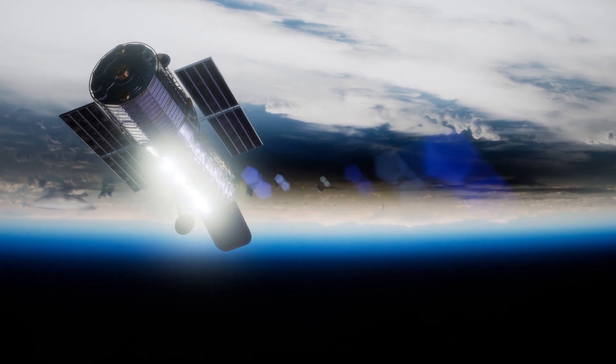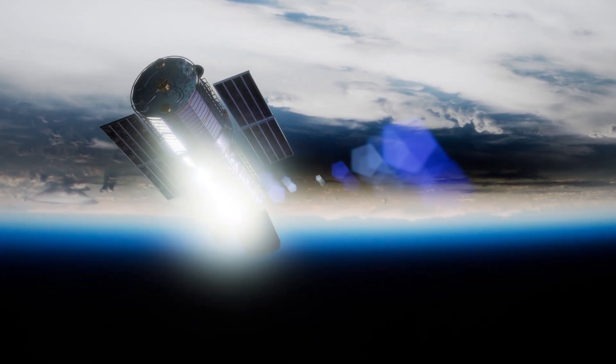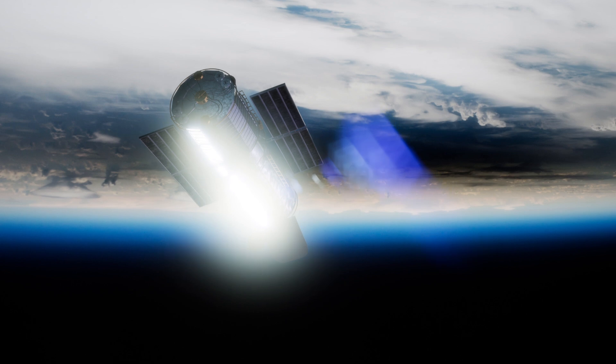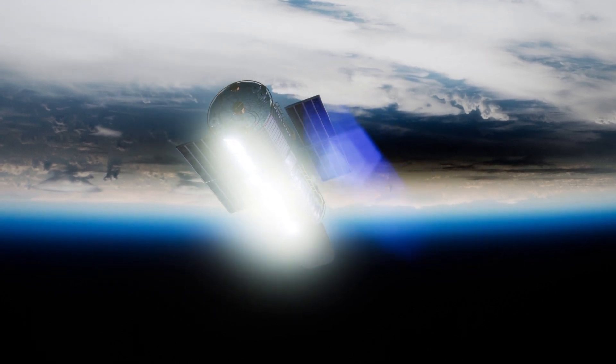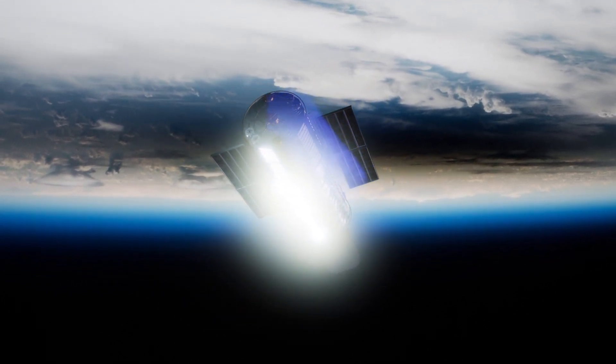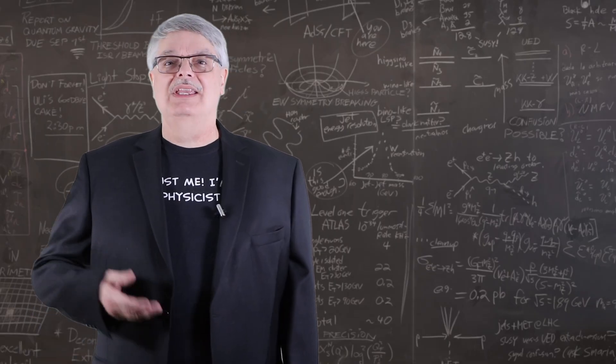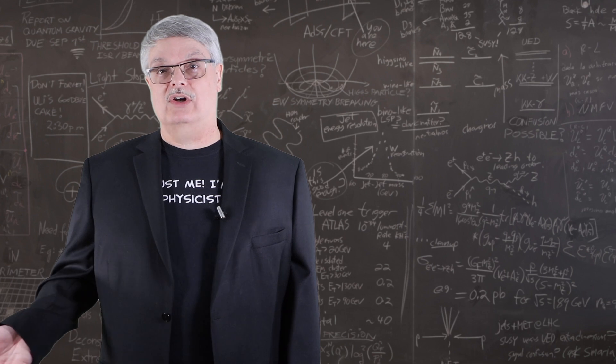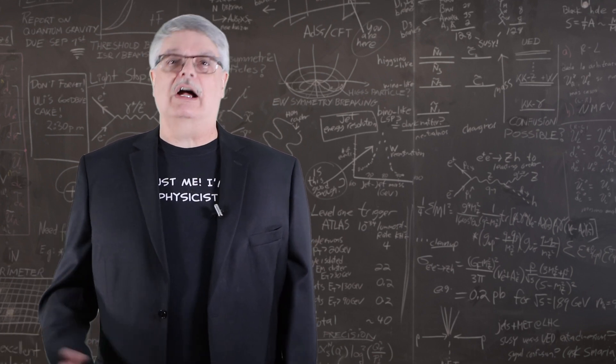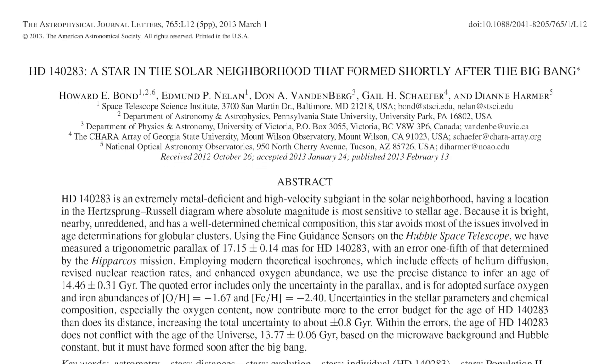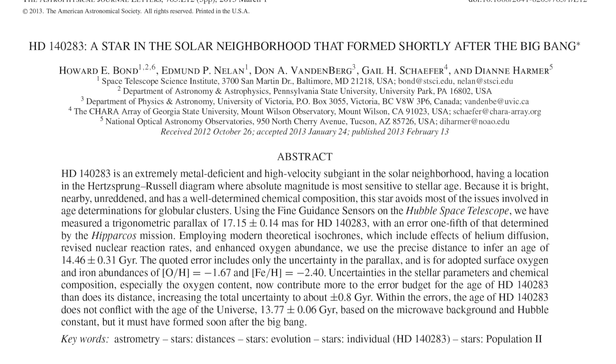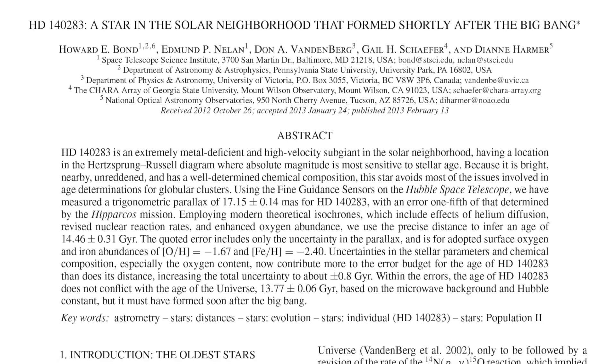In 2013, a precise measurement of the star's distance by the Hubble Space Telescope led to the estimate for the star's age that I quoted in the beginning of this video. The biggest contribution to the uncertainty in the star's age is no longer a determination of the star's distance, but rather its oxygen content. I put a link to the paper that detailed all of this in the video description if you want to know the details.